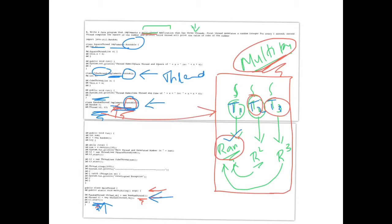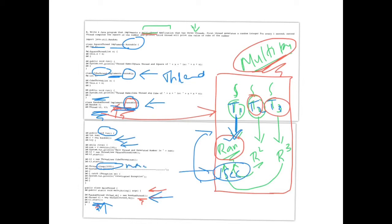What the thread is supposed to do is defined by the run() function. In the run function, you are creating a random number. This thread creates a random number, sleeps for one second, then creates another random number, and the process keeps continuing. Sleep 1000 is in milliseconds, so that converts to one second. Every iteration, a random number is created, its square is calculated, its cube is calculated, then it sleeps for one second and the process repeats.